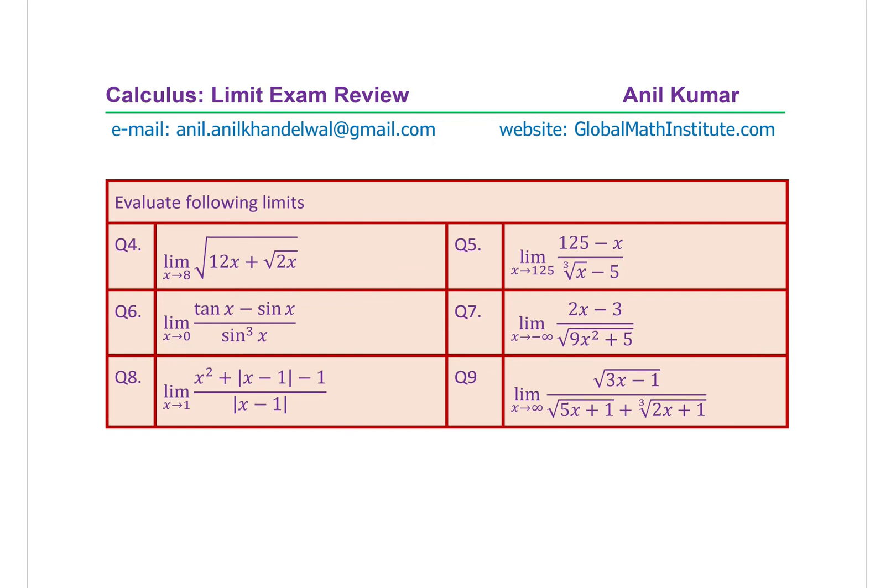Question 7: limit of (2x minus 3) divided by square root of (9x squared plus 5) as x approaches minus infinity. Question 8: limit of (x squared plus absolute value of x minus 1 minus 1) divided by absolute value of x minus 1, as x approaches 1. Question 9: find the limit of square root of (3x minus 1) divided by (square root of (5x plus 1) plus cube root of (2x plus 1)) as x approaches infinity. Pause the video, copy these questions, solve them, and write down your answers.